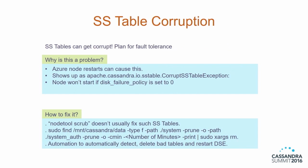SS table corruption: as Azure is moving nodes around, sometimes your SS tables will get corrupt because the node simply goes down while Cassandra is trying to write to the file system. This shows up as the corrupt SS table exception and clearly tells you the name of the bad SS table. The node won't start because we set the disk failure policy to zero. We have observed that node tool scrub usually doesn't fix these SS tables, so we literally run the command on the slide to get rid of those SS tables and run repairs so that the cluster is consistent.